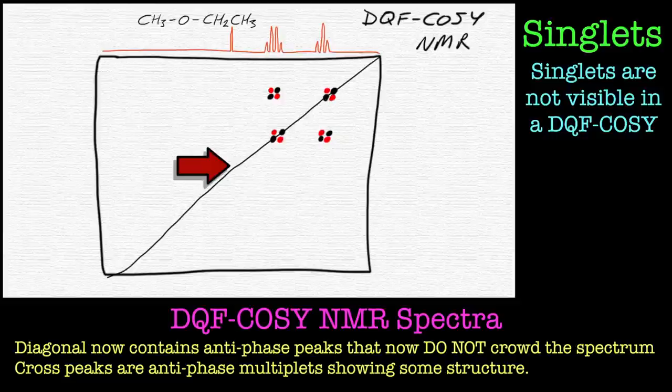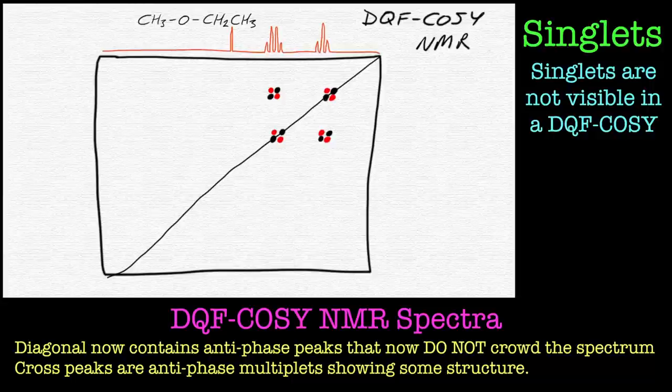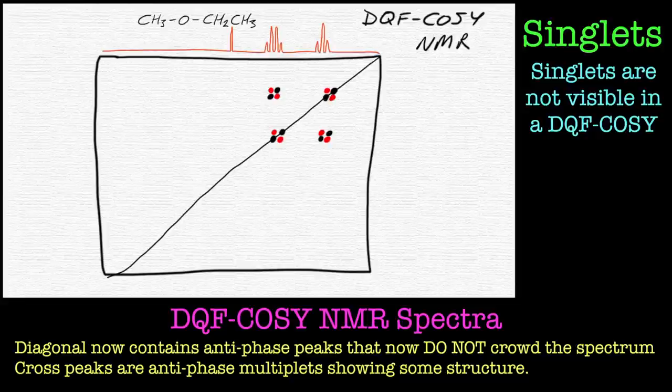So singlets will disappear because we're filtering out the singlet peaks. We want to see the double quantum and above transitions. So this can help in a number of ways.